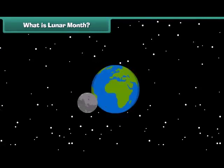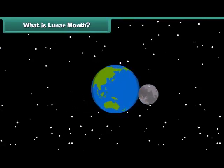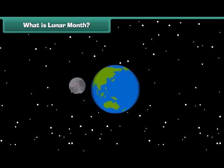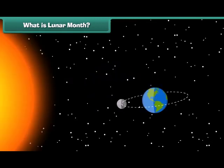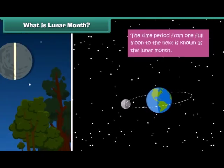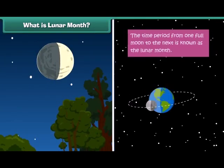The moon takes 27.3 days to orbit the Earth, but the time from one full moon to the next is 29.5 days, because Earth is also constantly moving and orbiting the Sun. We call this period from one full moon to the next the lunar month.